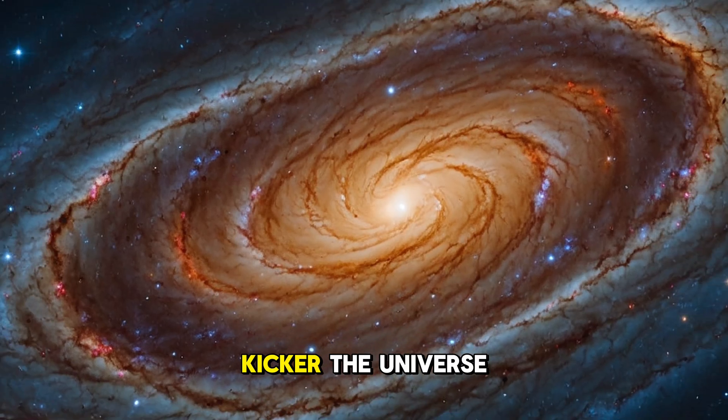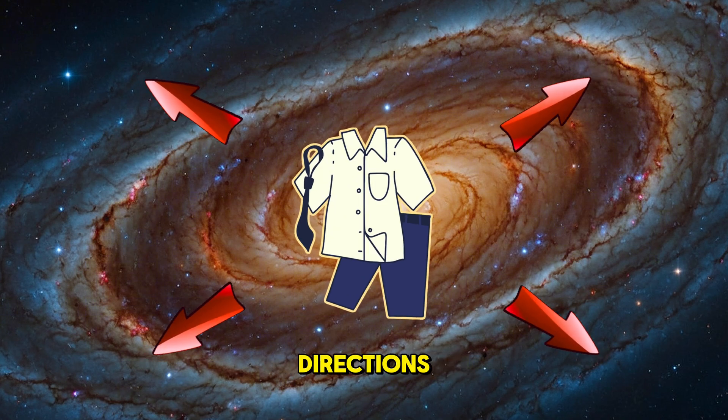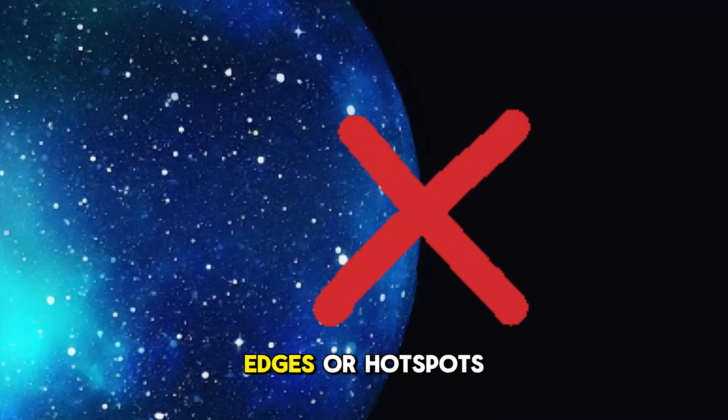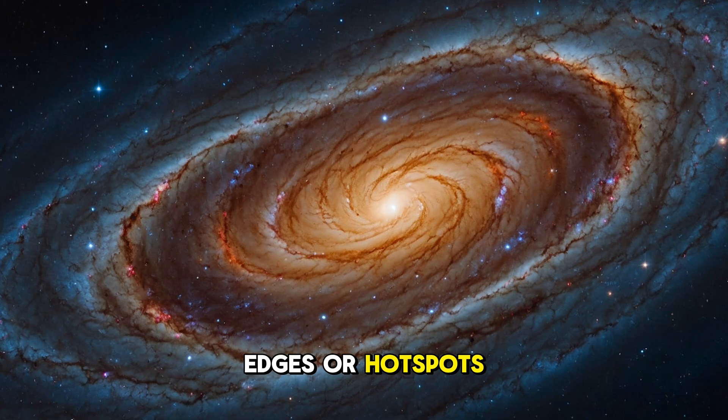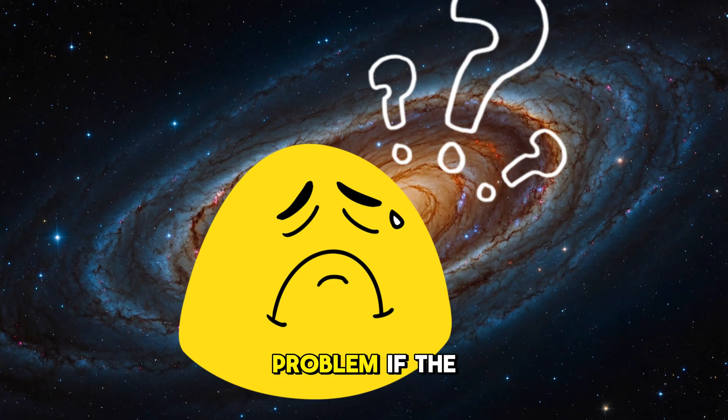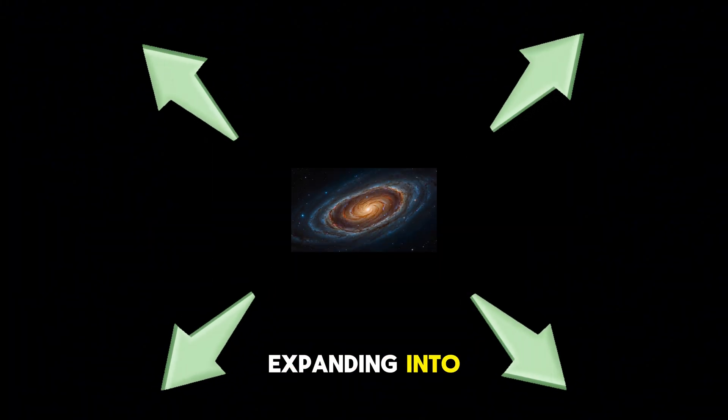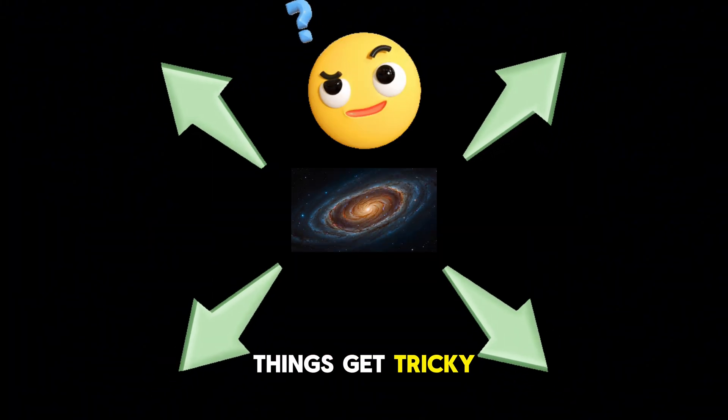But here's the kicker. The universe is isotropic. That means it's uniform in all directions. There are no edges or hot spots. It's the same no matter where you look. But here's the problem. If the universe is expanding, what is it expanding into?